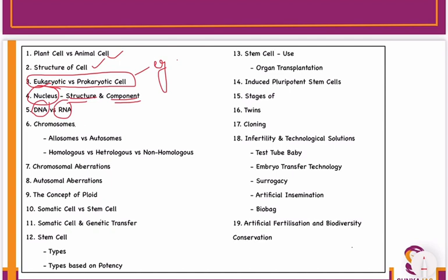Then move on to the concept of chromosomes. You have to do two things basically: the difference between allosomes and autosomes, and then the concept of homologous pairs, heterologous pairs, and non-homologous pairs. These are important from the examination perspective.